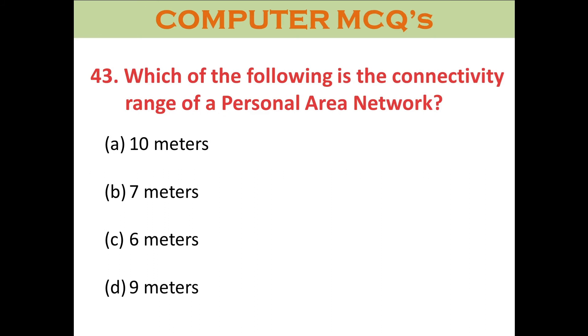Question forty-three: What is the connectivity range of a Personal Area Network (PAN)? A. Ten meters. B. Seven meters. C. Six meters. D. Nine meters. The right answer is A: Ten meters.